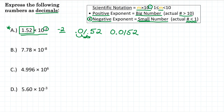So for number A, 1.52 times 10 to the negative second is the same as 0.0152. Those are the same numbers — one is in scientific notation and one is written as a decimal.